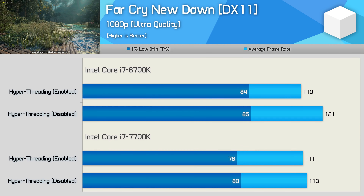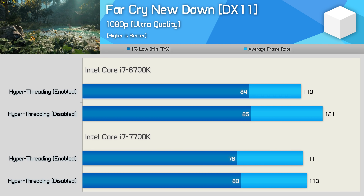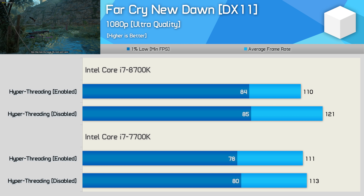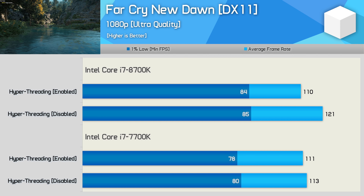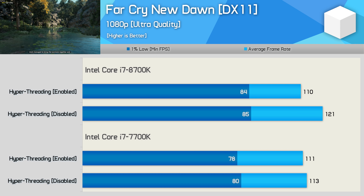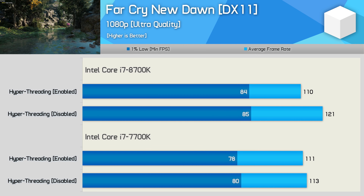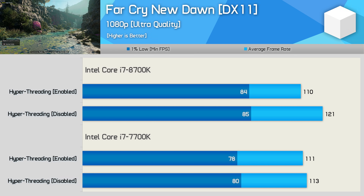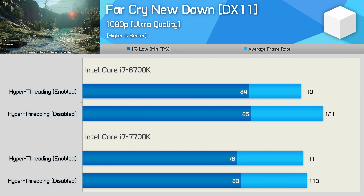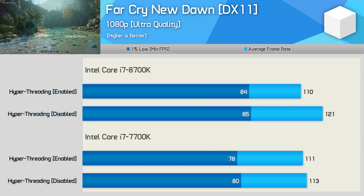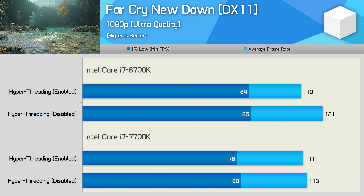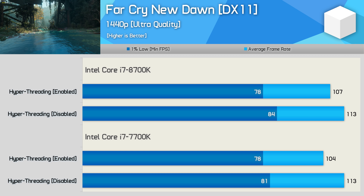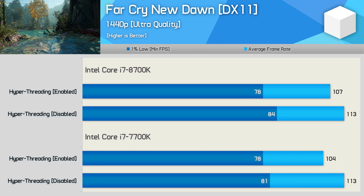Far Cry New Dawn is a title that plays much better on the 9700K than the 8700K, allowing around 120fps on average at 1080p. When we disable hyperthreading on the 8700K, it matches the 9700K despite having two fewer cores. So six cores and six threads is more efficient in this title than six cores with 12 threads — we do see this quite a bit in games when testing SMT. The 7700K with its fewer cores doesn't suffer the same issue, and was actually a smidgen faster with hyperthreading disabled. At 1440p, hyperthreading is actually slowing down both the 7700K and 8700K, with the effect more amplified at higher resolution.